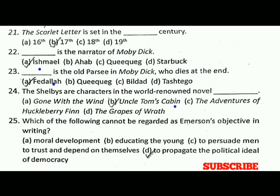Question number twenty-five: which of the following cannot be regarded as Emerson's objective in writing? The correct answer is D, that is to propagate the political ideal of democracy. The other options — A: moral development, B: educating the young, and C: to persuade men to trust and depend on themselves — are objectives of Emerson in his writing. But option D, to propagate the political ideal of democracy, is not.